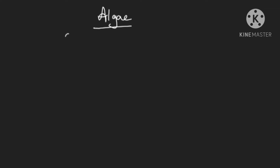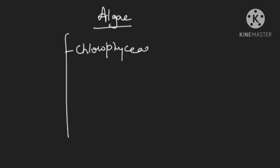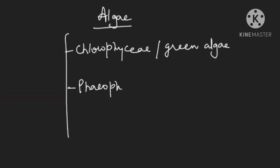Algae has three classes: one is Chlorophyceae, which is also known as green algae; Phaeophyceae, which is known as brown algae; and Rhodophyceae, which is known as red algae.